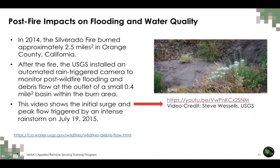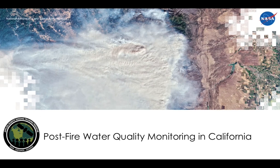These disasters are linked: post-fire, if there is heavy rain there will be increased runoff, flooding, potential mudslide or landslide, and poor water quality brought into streams and lakes in areas where fires burned. This brings us to our case study looking at post-fire water quality in California.